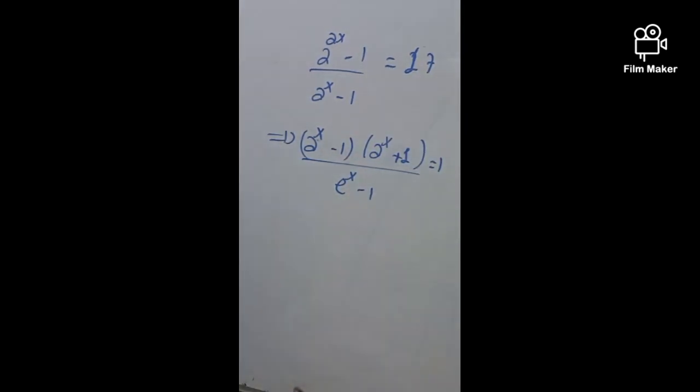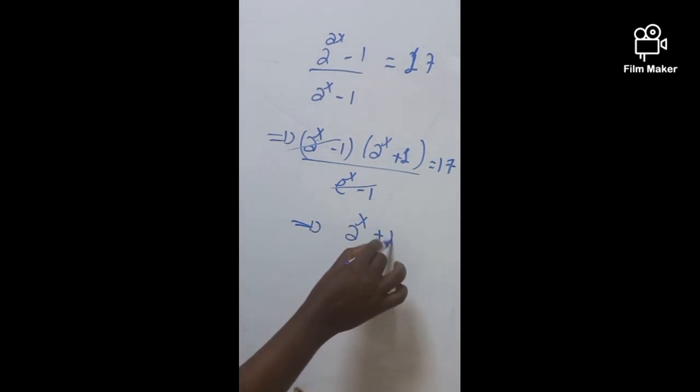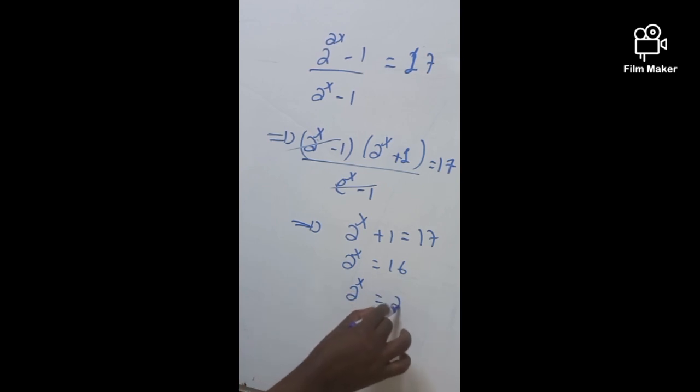And hence, as you know, this is immediately cancelled. So this implies that 2^x + 1 = 17. Move this to the right: 2^x = 16, which is 2^4. This implies that x = 4.